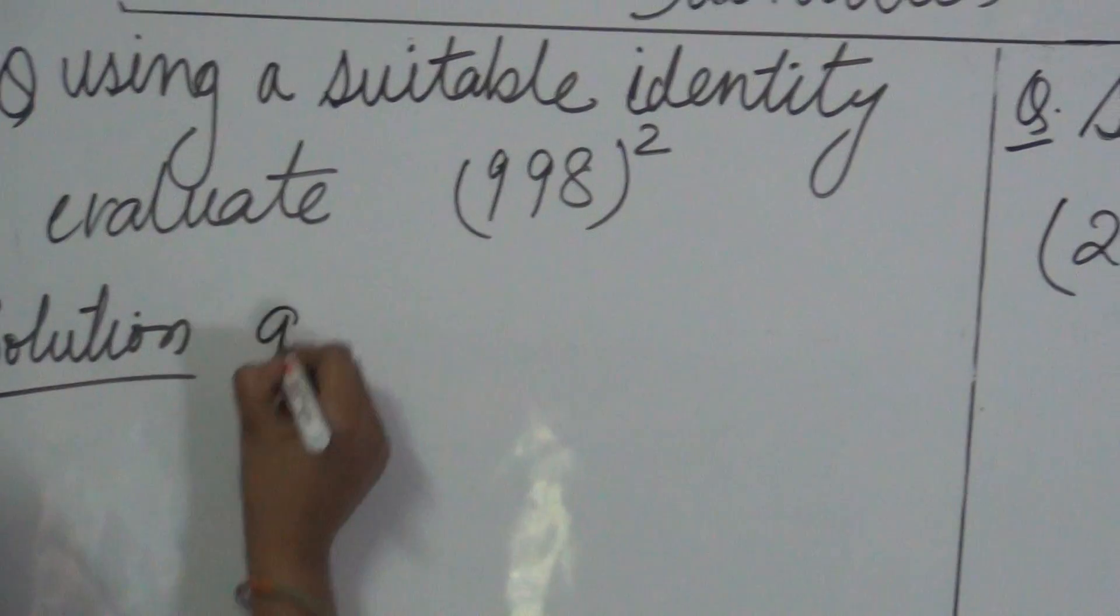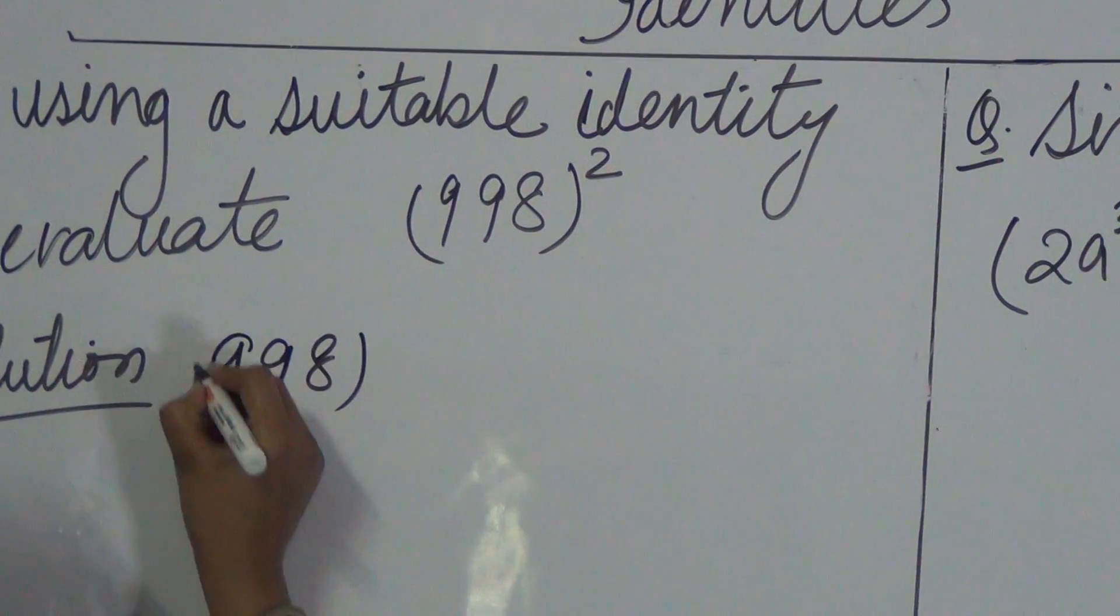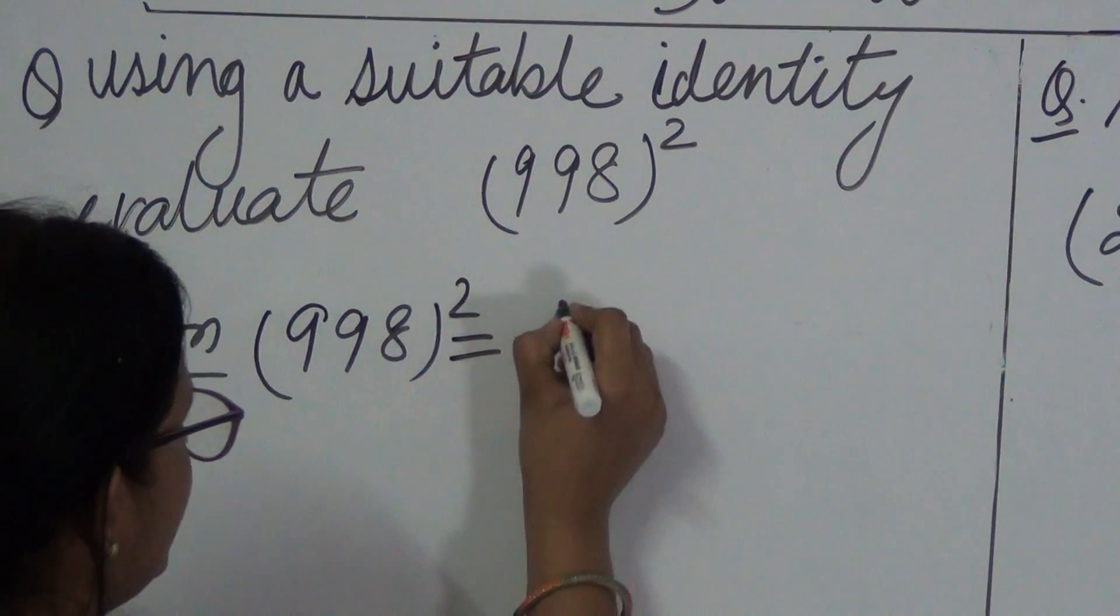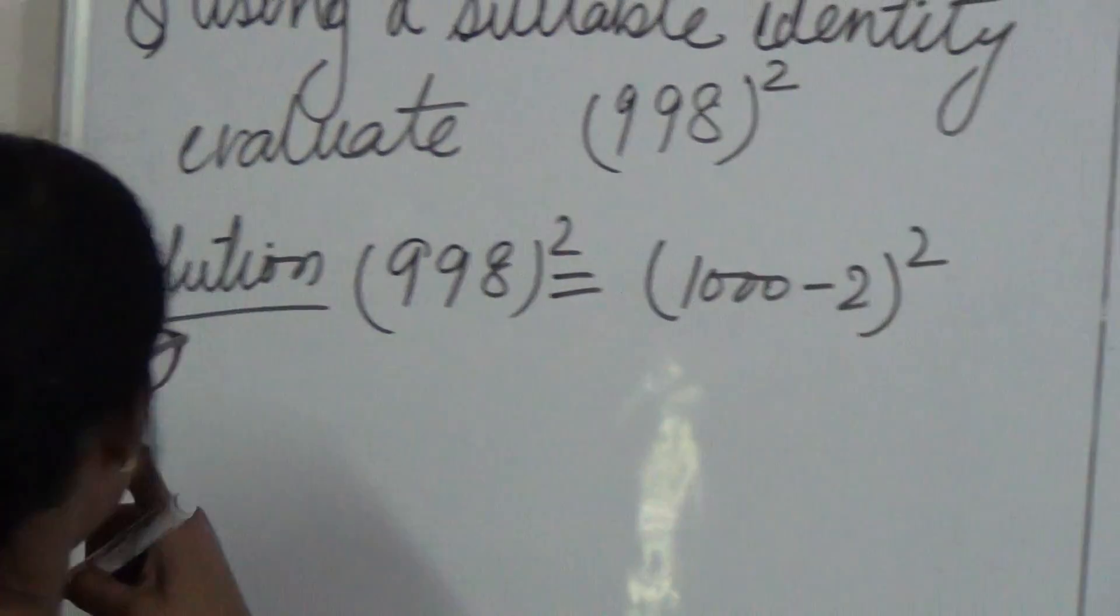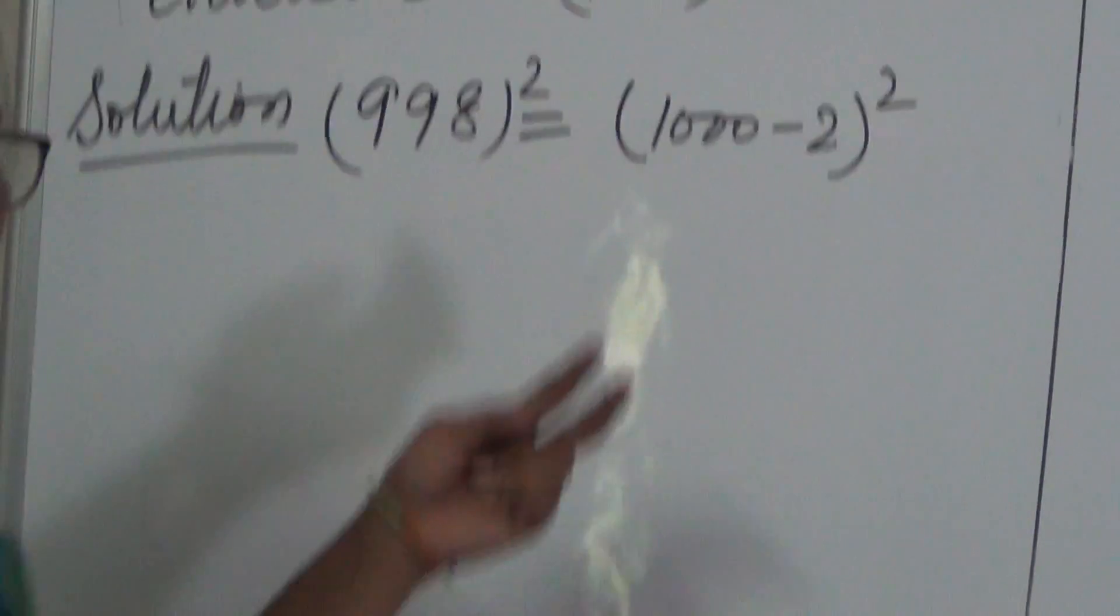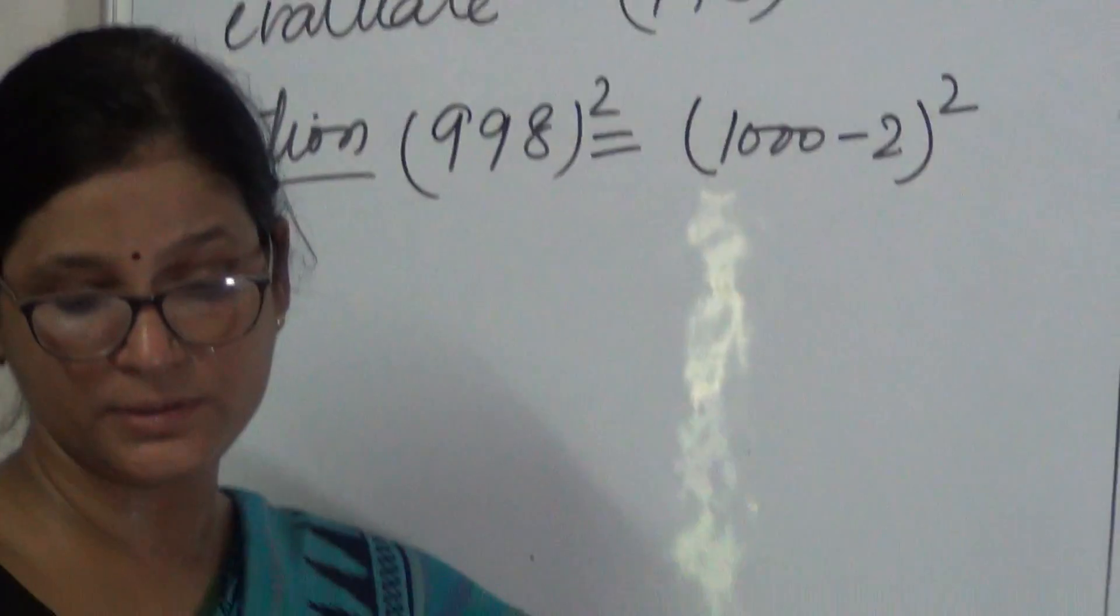We can write 998 as 1000 minus 2 square. Now this is in the form of A minus B whole square.